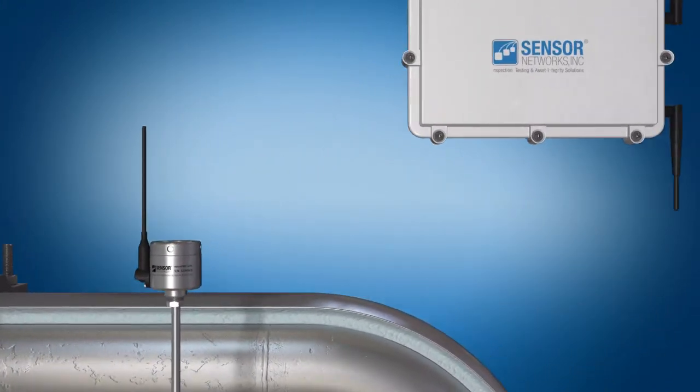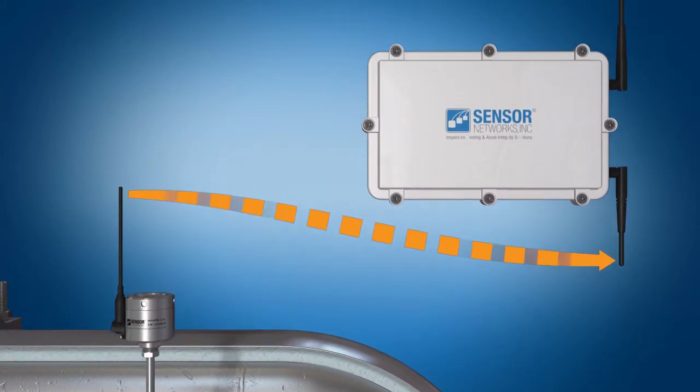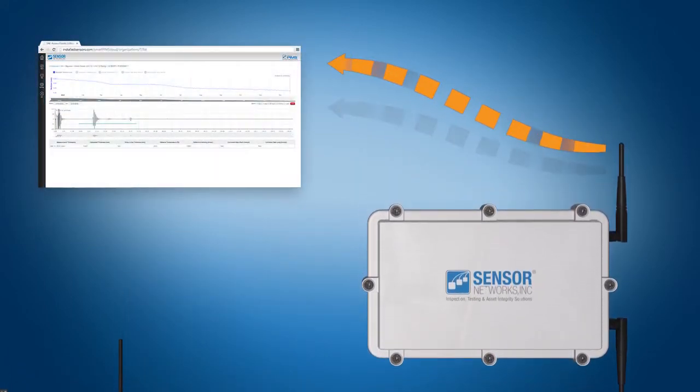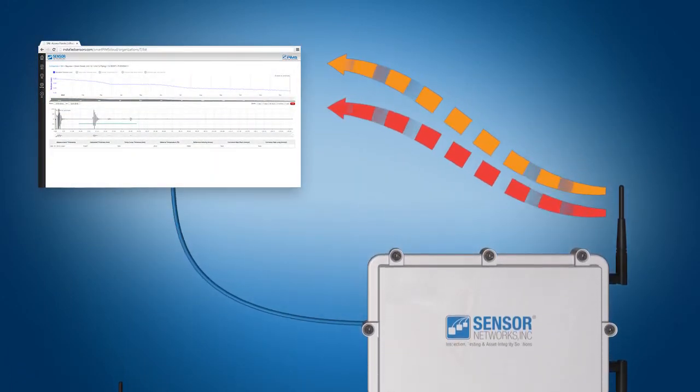The data collected is temperature corrected and then transmitted wirelessly to a gateway. The gateway forwards the data to the WebPIMS cloud solution via cellular, Wi-Fi, or Ethernet.